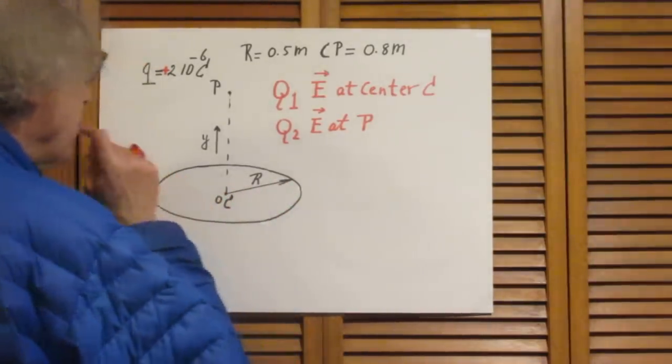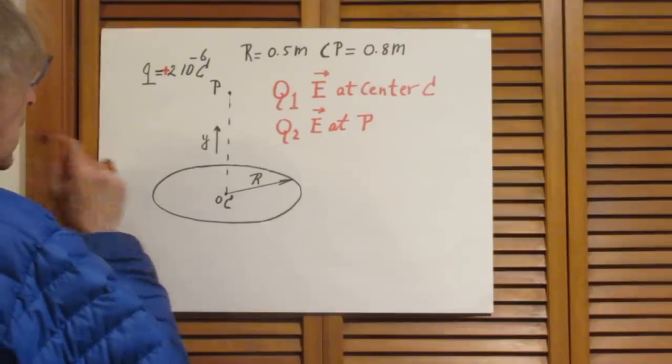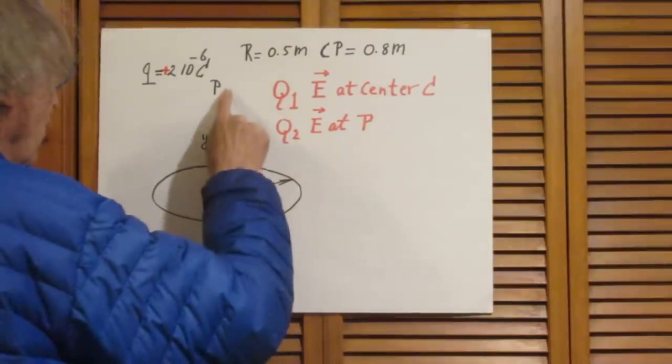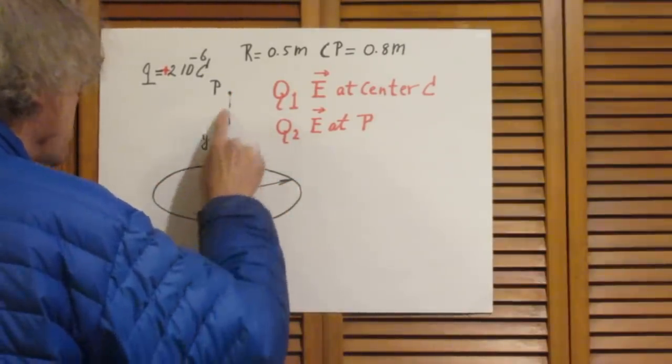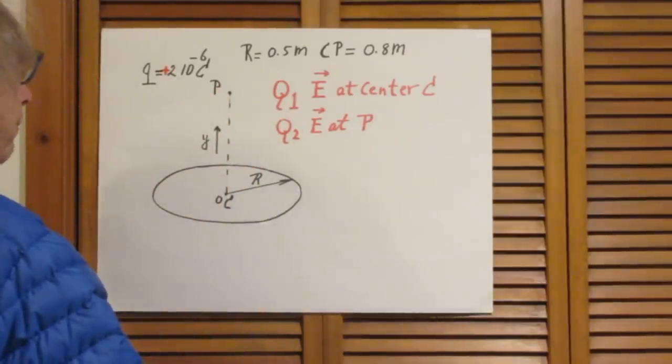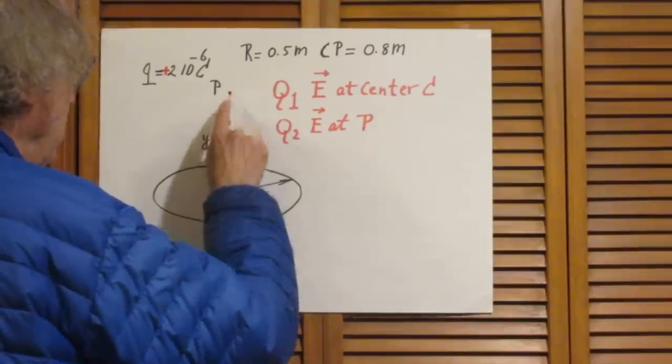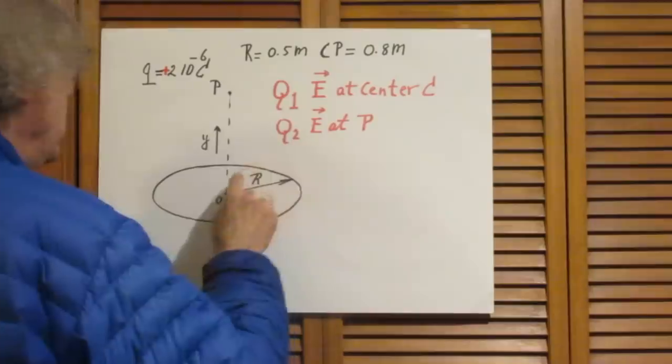The radius is half a meter. There is a point P here on this line which is perpendicular to the surface and going through the center. This distance from point P to C is 0.8 meters.